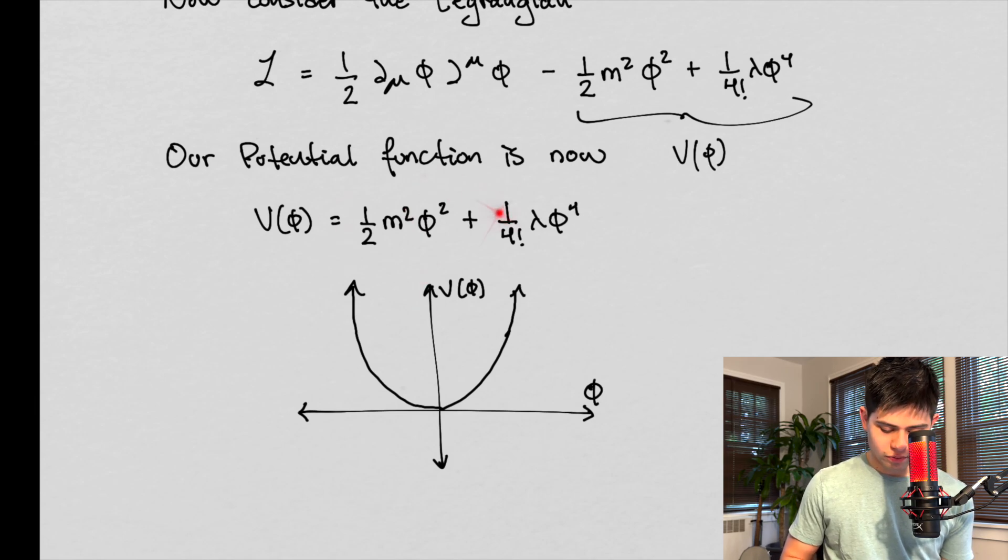So our kinetic term minus our potential term, that means our potential term looks like this. And when we graph it on an x-axis that is phi and our potential, we get this parabola shape. And you can go ahead and plug this in. You can plug some values in for phi, use Excel or whatever you want to use to graph something, and it'll end up looking like this.